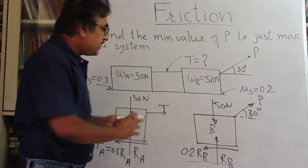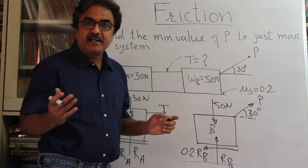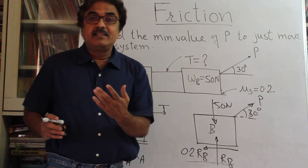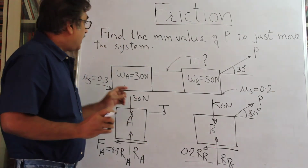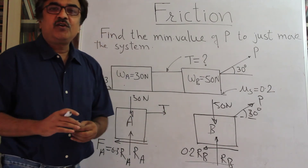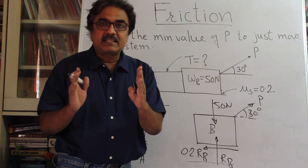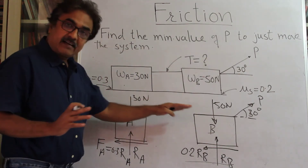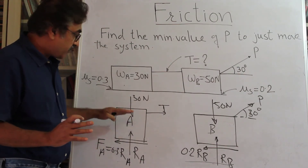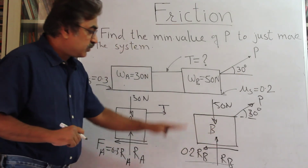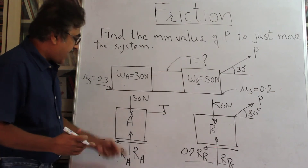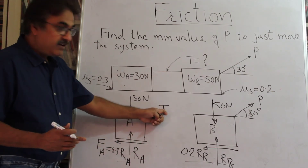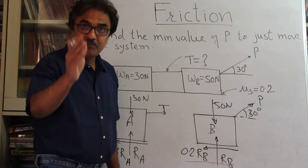Once the free body diagrams are drawn, the problem is essentially over. Note that unlike ladder problems, we are not given dimensions of these objects, so we do not need to consider turning moments. The conditions for equilibrium are only ΣF_x = 0 and ΣF_y = 0 for each body. For block A, from ΣF_y = 0, R_A = 30 N, and from ΣF_x = 0, T = 0.3 × R_A. But wait — I made a mistake which I hope you already noticed.